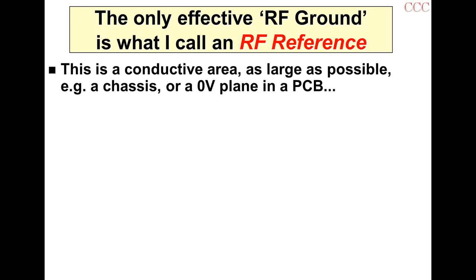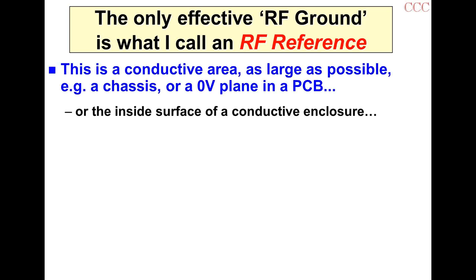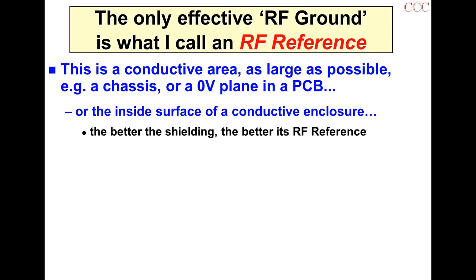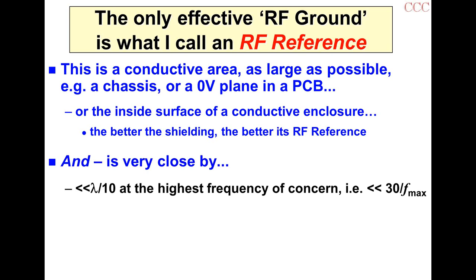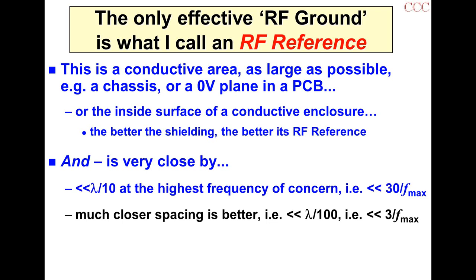What the RF reference is, is the conductive area — as large as you can make it. If you have a very small product, it won't be very large or very effective. But it's the large metal area, like a chassis or a zero-volt plane of a PCB, or the inside surface of a conductive enclosure. The better the conductive enclosure is at shielding, the better it is at providing an RF reference. But it also has to be very nearby — much closer than lambda over 10 at the highest frequency of concern, F_max. In air, that's 30 over F_max meters.